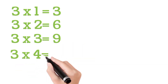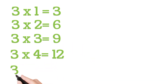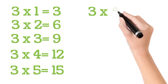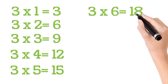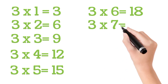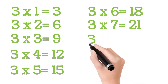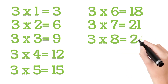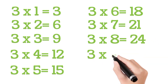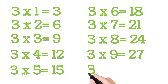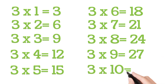Three Four's a Twelve. Three Five's a Fifteen. Three Six's a Eighteen. Three Seven's a Twenty One. Three Eight's a Twenty Four. Three Nine's a Twenty Seven. Three Ten's a Thirty.